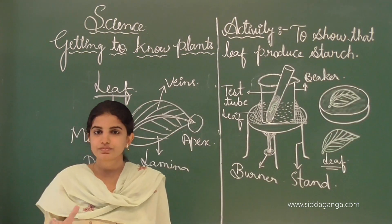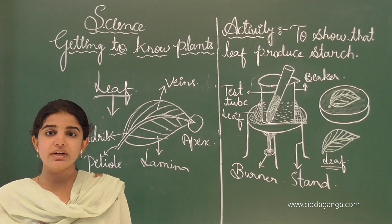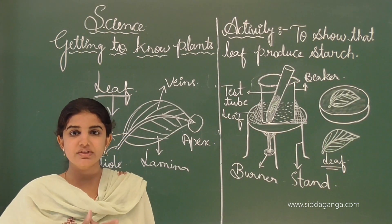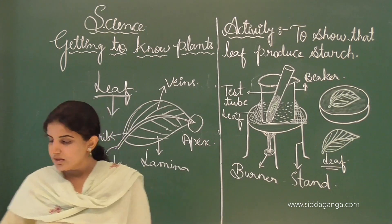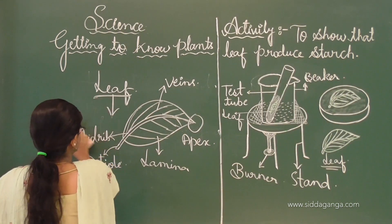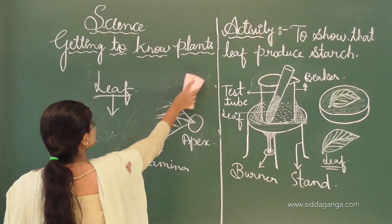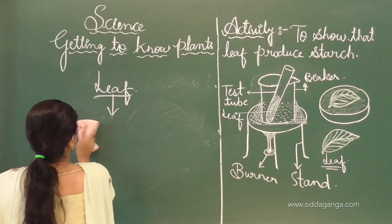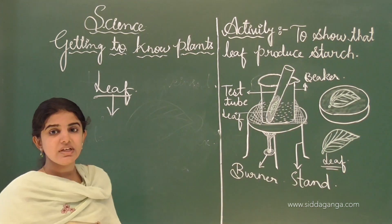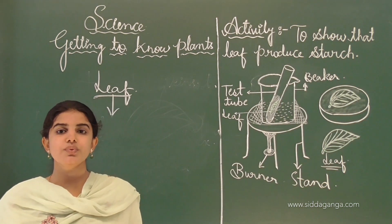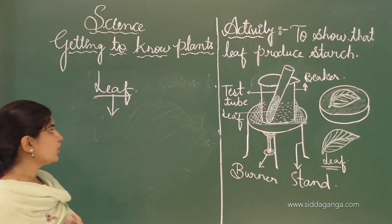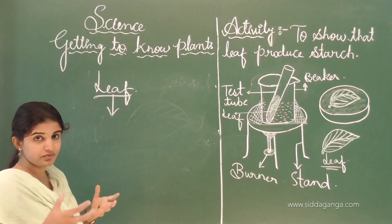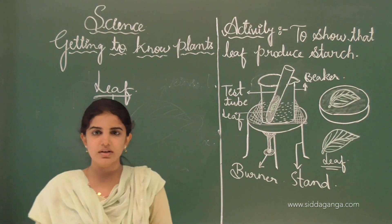As told, the leaf is also called the kitchen factory of the plant. Photosynthesis takes place in the leaf. Photosynthesis is nothing but the food-preparing process. The function of the leaf — photosynthesis — is very important, and this food-preparing process takes place in the leaf.